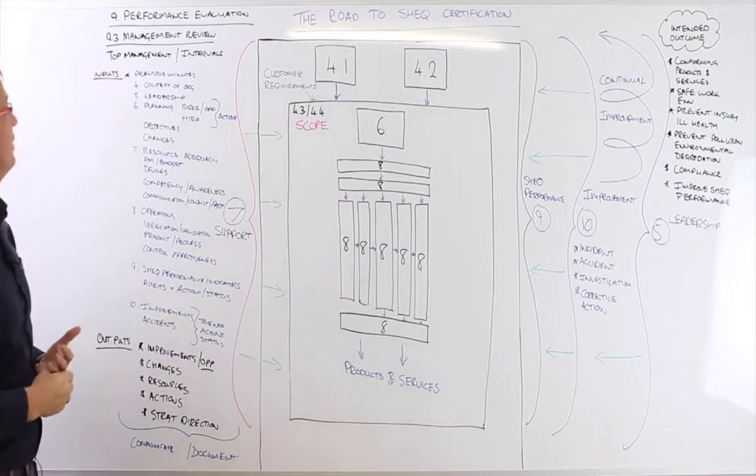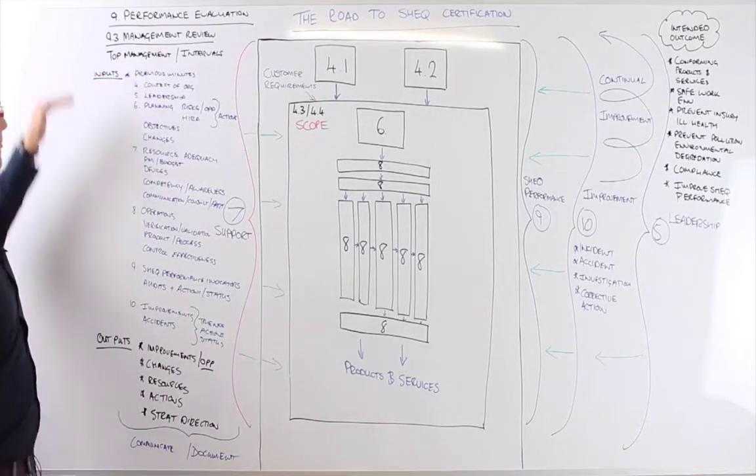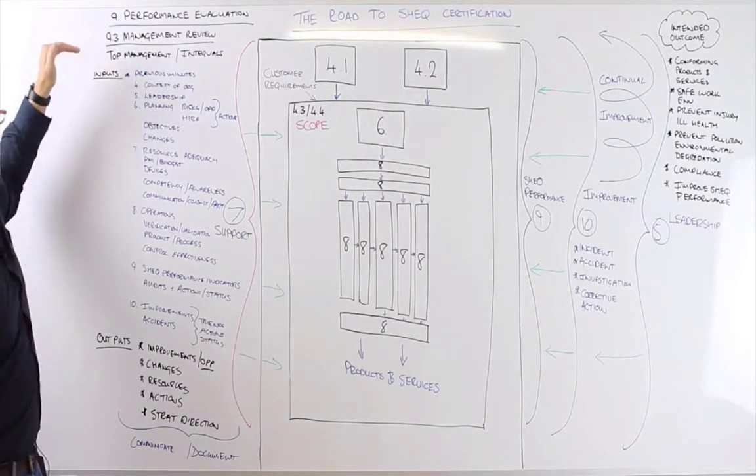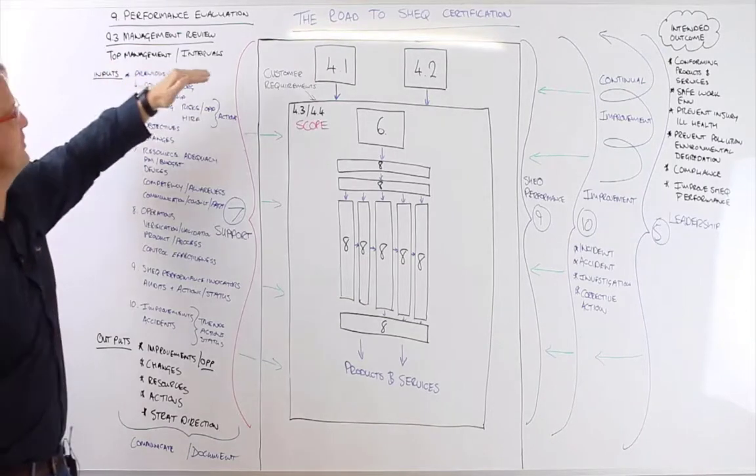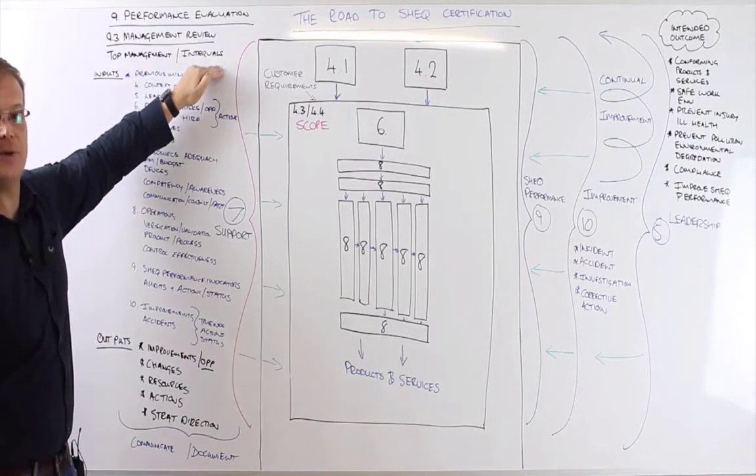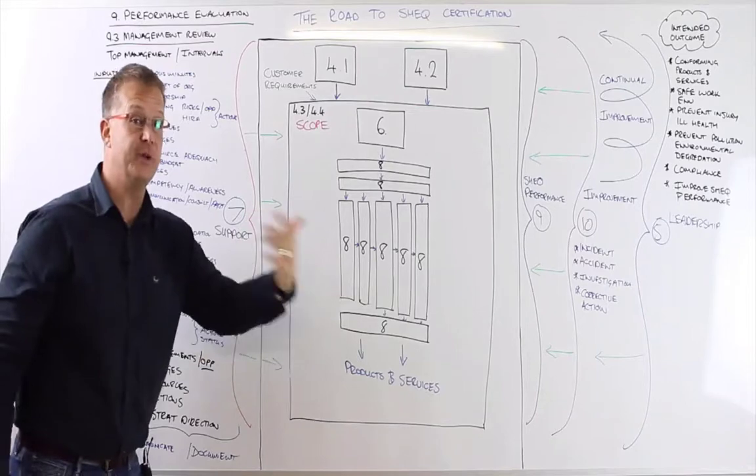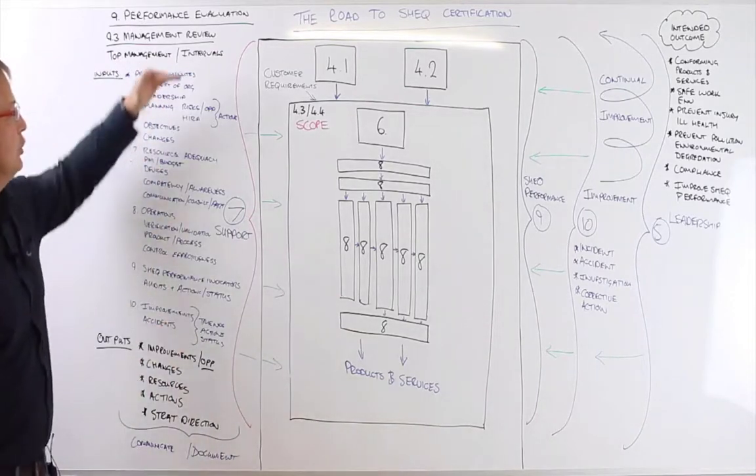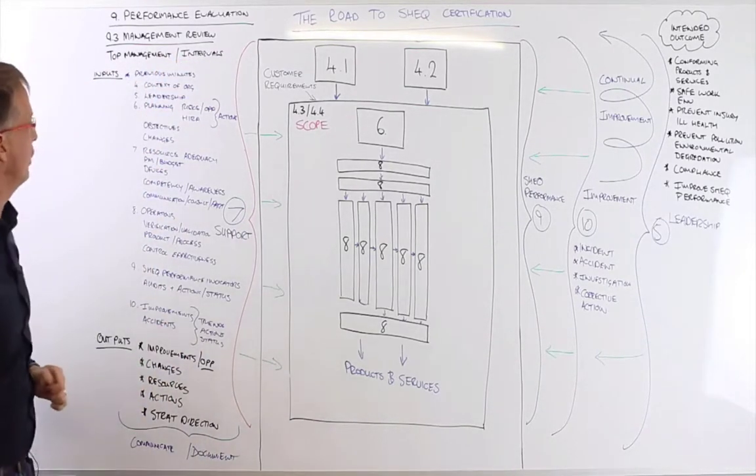So let's have a look at Clause 9.3, Management Review. Top management is required to review your SHE management system at predetermined intervals. It could be monthly, it could be quarterly, it could be annually. Your organization should make a call on that.